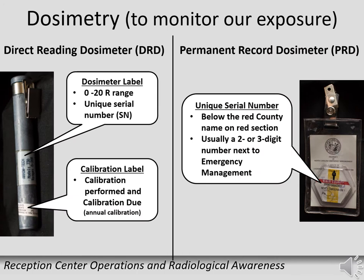Two types of dosimeter will be provided to you for any type of response; both will measure your exposure for the entire event. The direct reading dosimeter is used to measure your exposure while performing your actions and can be read directly. It has two labels: the middle label shows the range and unique serial number, and the other label shows the calibration due date. The permanent record dosimeter measures your exposure for the whole event and has required documentation information on the front. Below the red county name is the two or three digit unique serial number. These badges are changed out annually by emergency management.